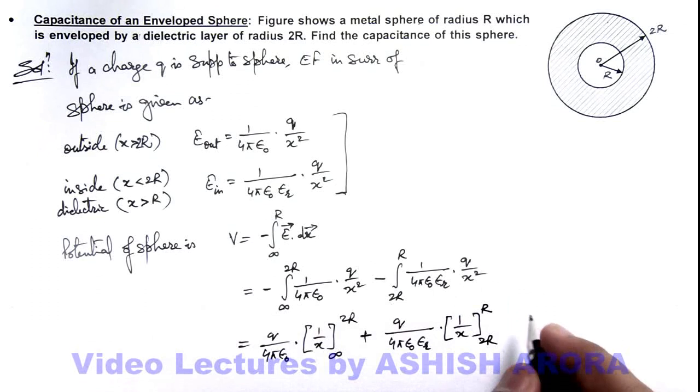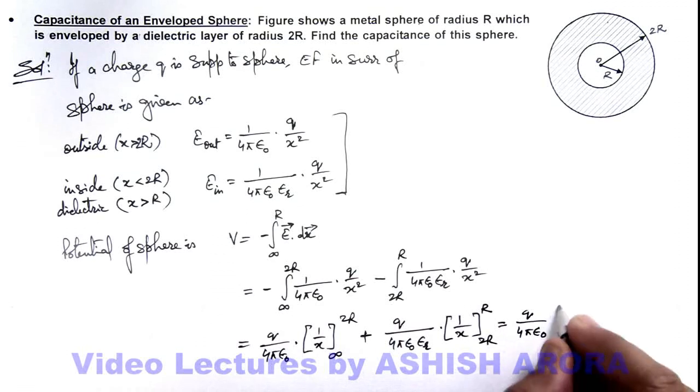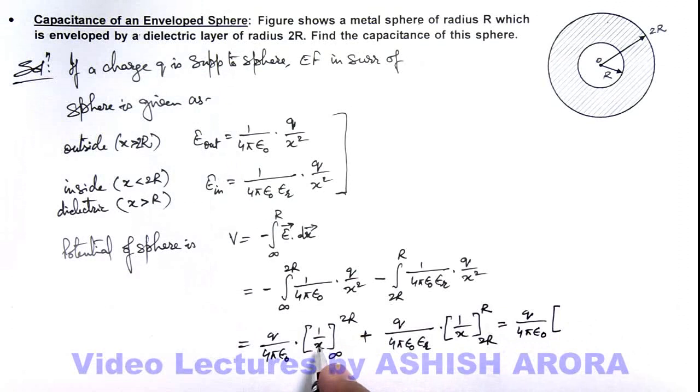So in this situation the result we are getting here is Q by 4π epsilon not. And here you can substitute the upper limit, so this will be 1 by 2R.